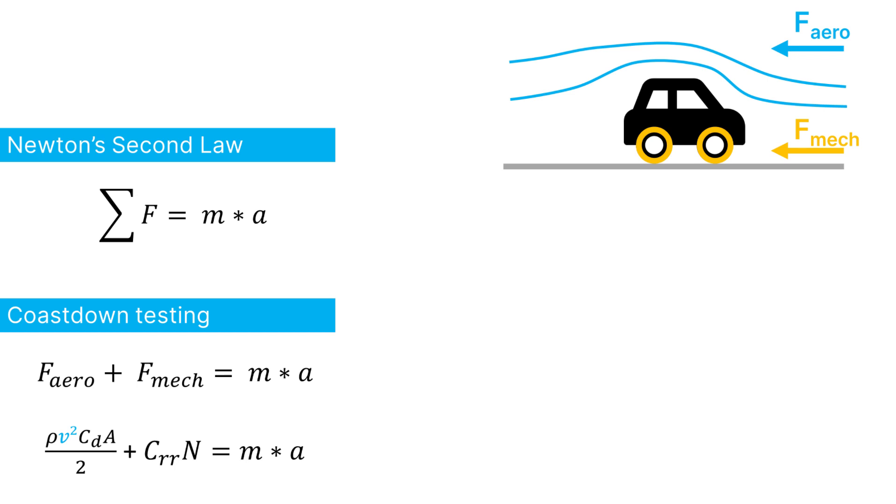For the mechanical resistance, we've limited ourselves to the rolling resistance, which is calculated in this case by multiplying the coefficient of rolling resistance, CRR, with the normal force of the vehicle on the ground, caused by its weight. As you see, there's no velocity term in this one.